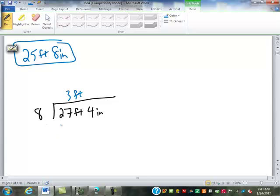If we subtract, we're left with three feet. Before we bring down the four inches here, what do we have to do to the three feet? Convert it to inches. This becomes thirty-six inches. Now, four plus thirty-six is forty inches. So forty divided by eight is five inches. So if I had twenty-seven feet four inches worth of material, I'm cutting into eight equal pieces. Each piece will be eight feet, or three feet five inches.